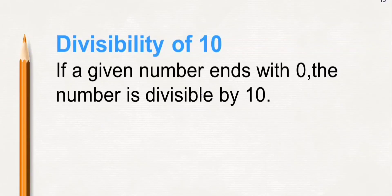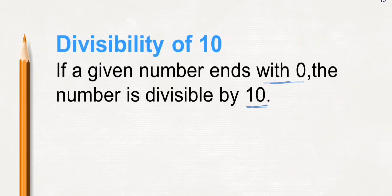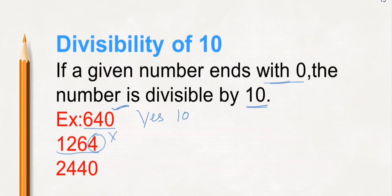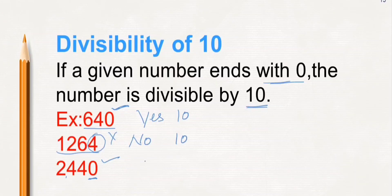Next, divisibility of 10. If a given number ends with 0, the number is divisible by 10. If the number is not ending with 0, the number is not divisible by 10. Look at an example. In the first number, 640, at the ones place there is 0, so it is divisible by 10. In the second number, 1264, at the ones place it is 4, so it is not divisible by 10. In the third number, 2440, at the ones place there is 0, so the number is divisible by 10.